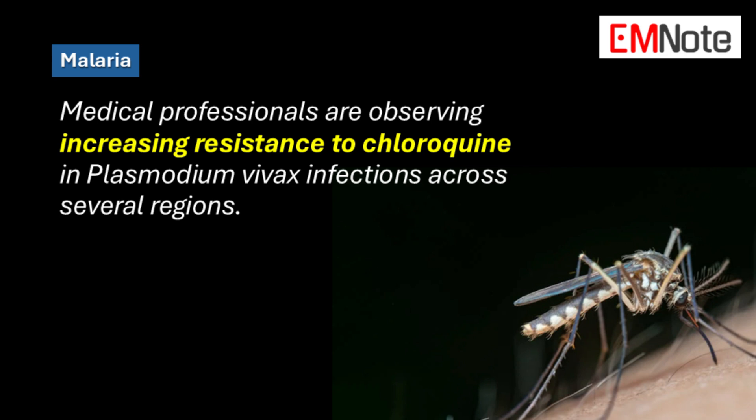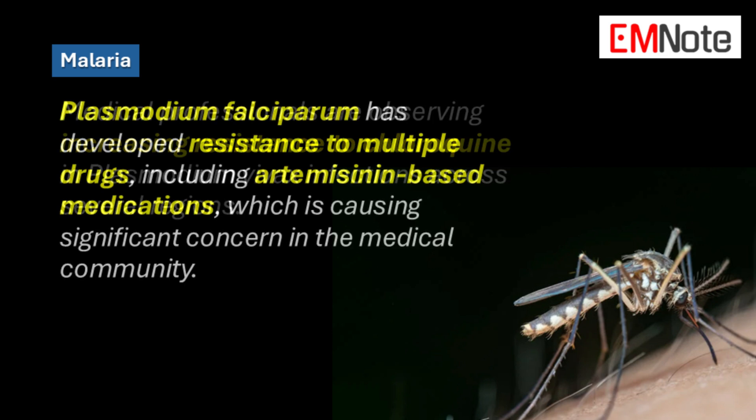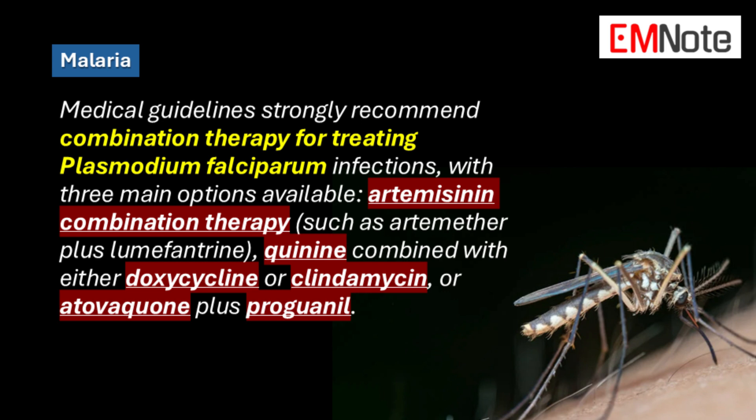Medical professionals are observing increasing resistance to chloroquine in Plasmodium vivax infections across several regions. Plasmodium falciparum has developed resistance to multiple drugs, including artemisinin-based medications, causing significant concern. Medical guidelines strongly recommend artemisinin-based combination therapy for treating Plasmodium falciparum infections, with three main options: artemether plus lumefantrine, quinine combined with either doxycycline or clindamycin, or atovaquone plus proguanil.